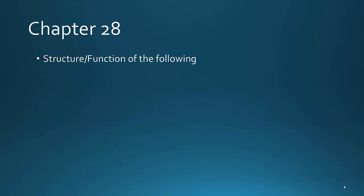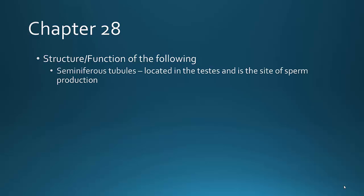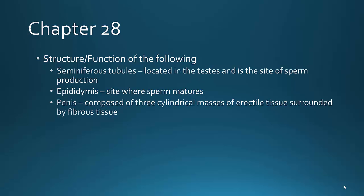Now let's look at chapter 28. You need to know the structure or function of the following. The seminiferous tubules are located in the testes, and this is the site of sperm production. The epididymis in the male is the site where sperm is going to mature. The penis is composed of three cylindrical masses of erectile tissue surrounded by fibrous tissue.